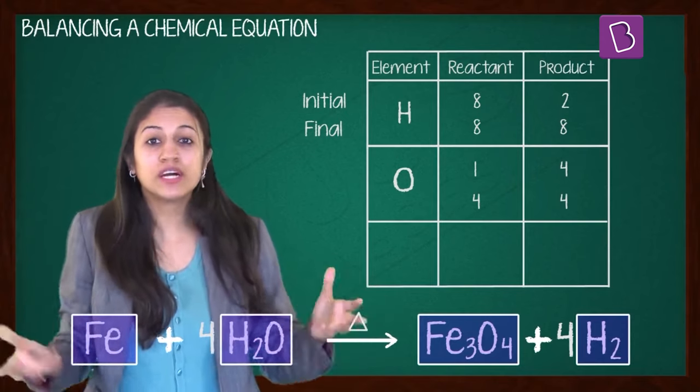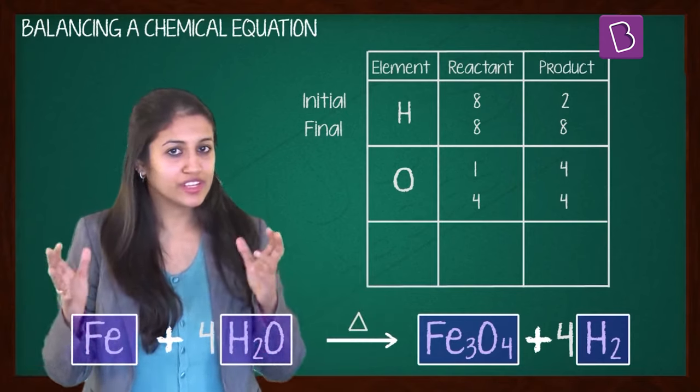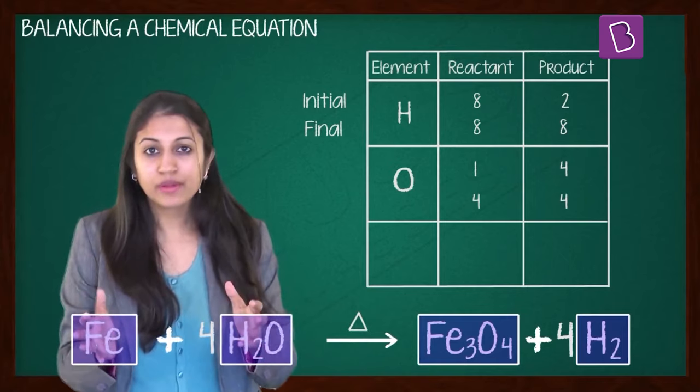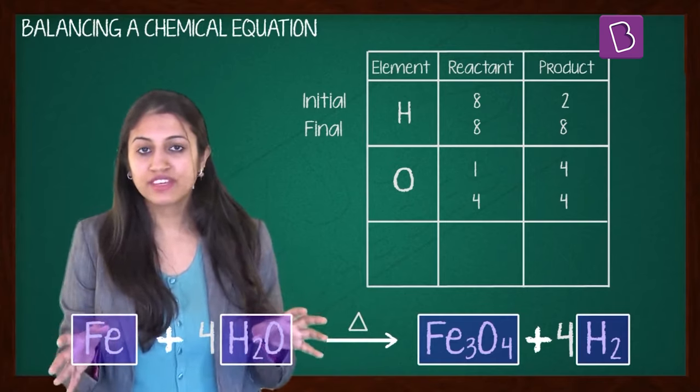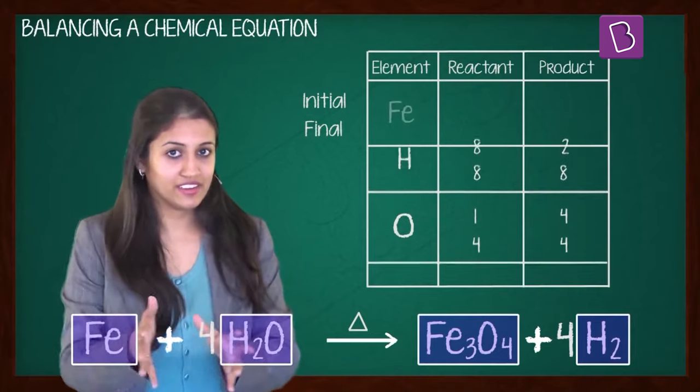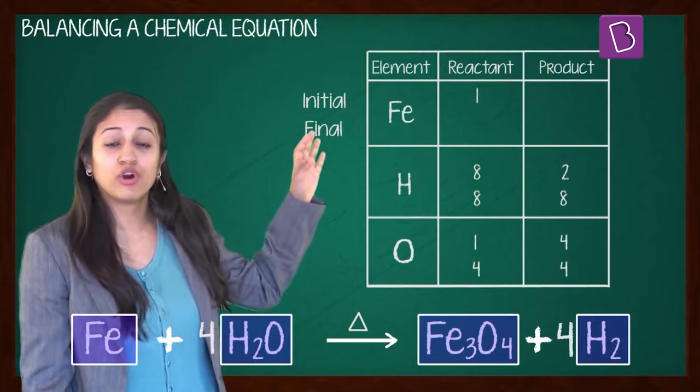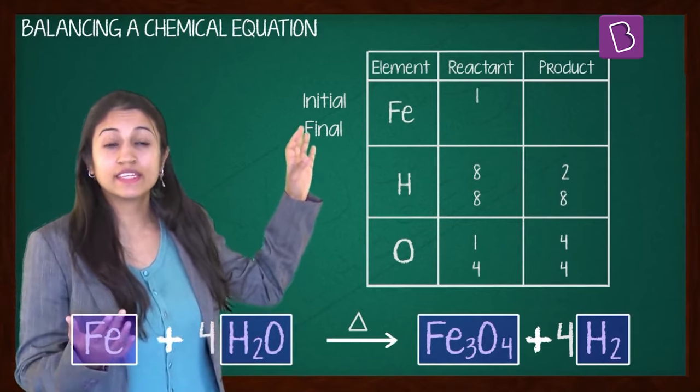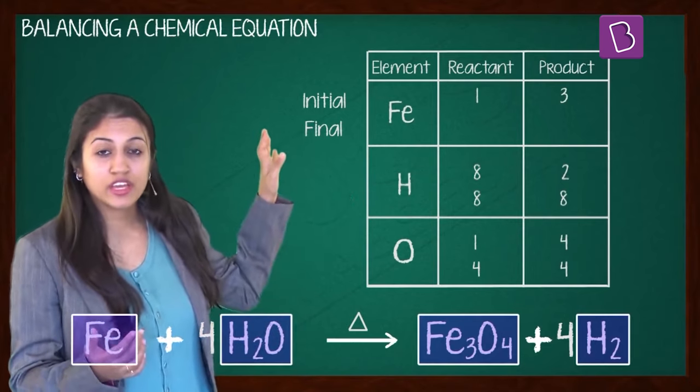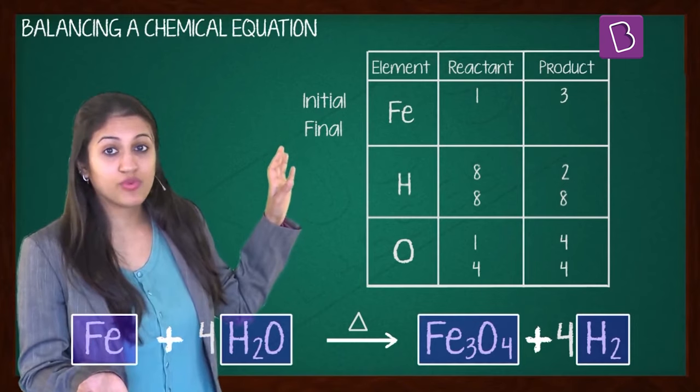Examine this equation and pick up the third element which is not balanced. You can clearly see that the only element left to be balanced is iron. So I have my comparison chart here. Initially, the number of atoms I have of iron in the reactant is 1, and in the product it's 3. So I need to make it 3 in the reactant as well.